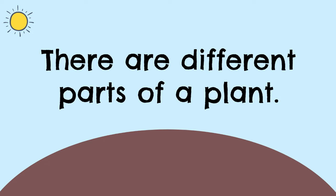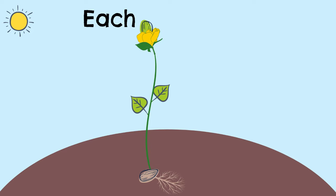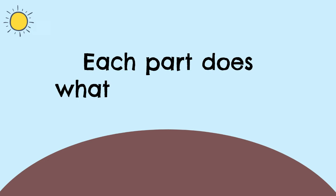A seed, root, stem, leaves, flower, fruit. Each part of a plant has a purpose. Each part does what it needs to do.